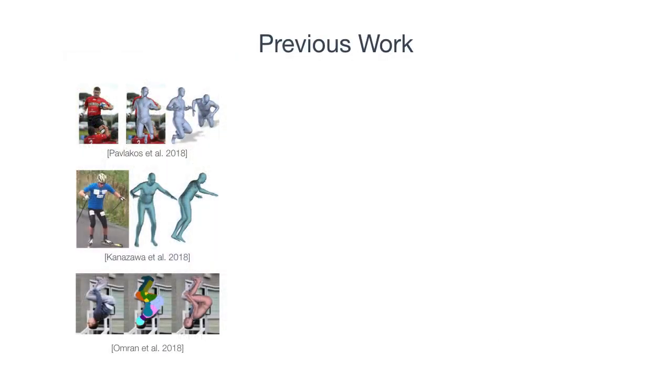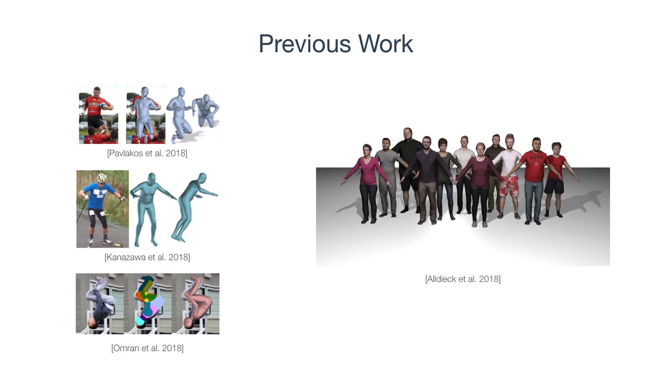Previous work has mostly focused on pose and minimal shape variation explaining differences in bone length. Most relevant to our work, a semi-automatic optimization-based method has been presented that optimizes for body shape and clothing from binary silhouettes.